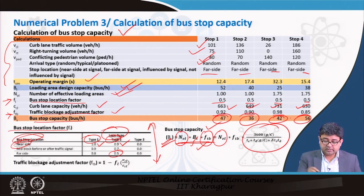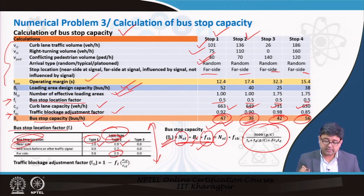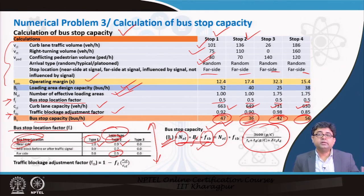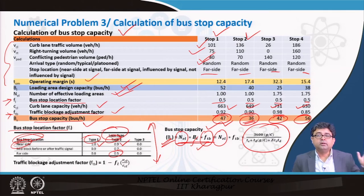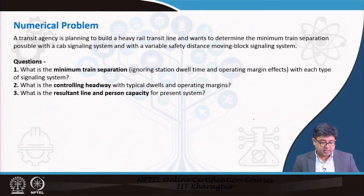The results show that stop 1 can process 47 buses per hour whereas stop 2 can only process 36 buses per hour. This gives you the understanding of how your bus stops are able to handle the scheduled bus frequency for the entire route. That is a complete example of bus stop capacity calculation.